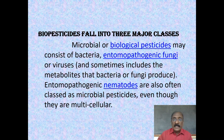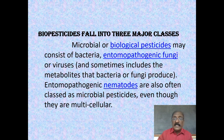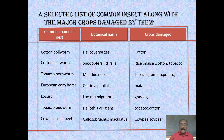Biopesticides fall into three major classes. Microbial or biological pesticides may consist of bacteria, entomopathogenic fungi, or viruses, and sometimes include the metabolites that bacteria or fungi can produce. Entomopathogenic nematodes are also often classed as microbial pesticides, even though they are multicellular.